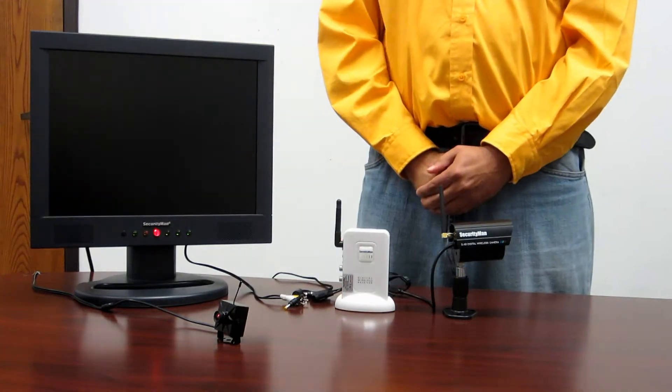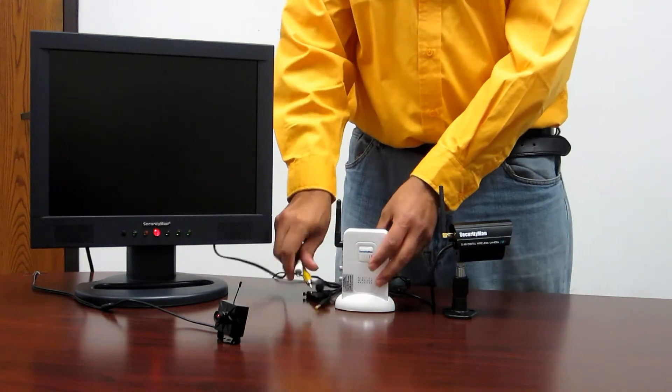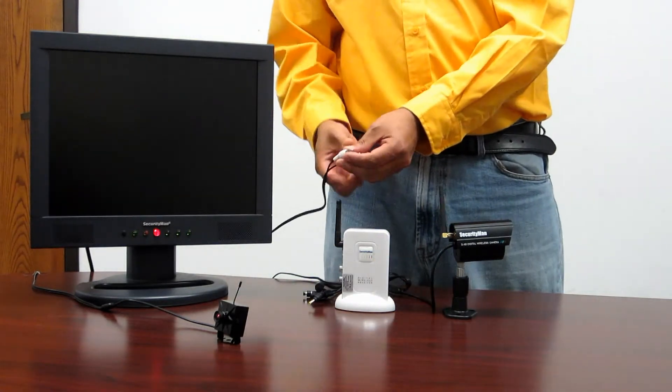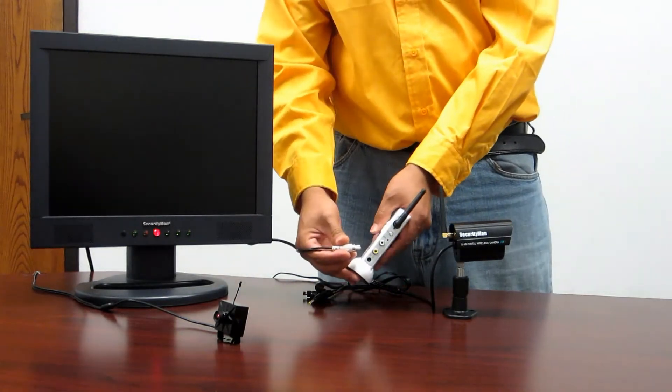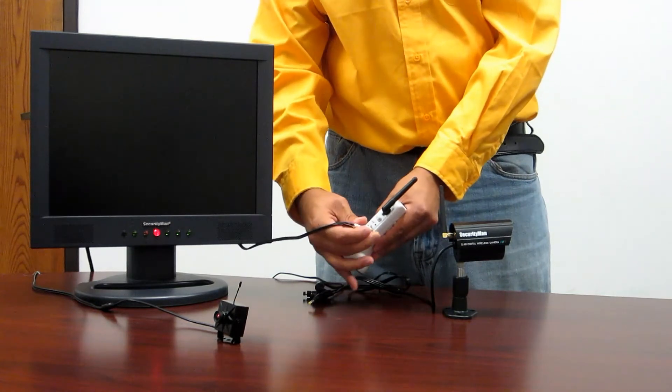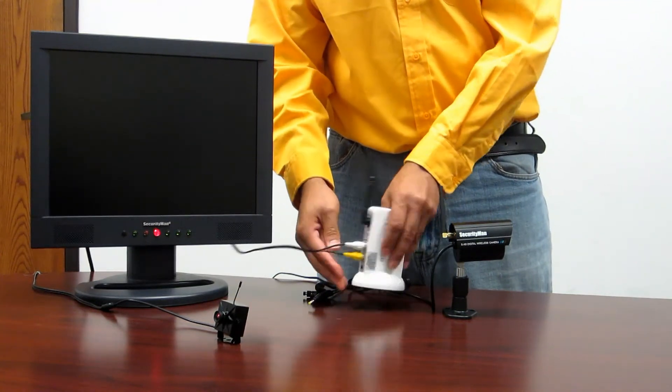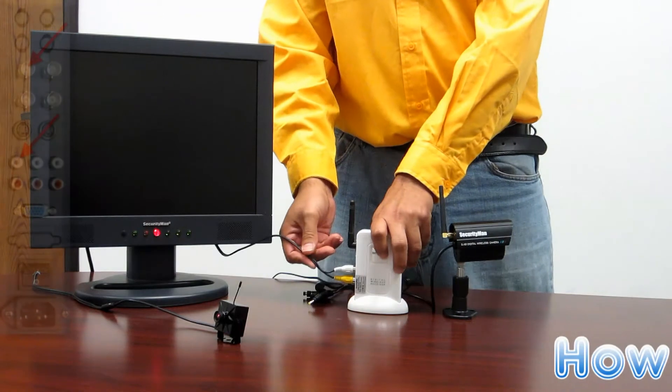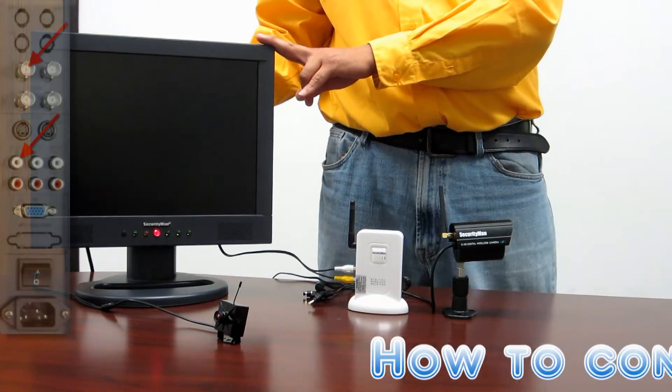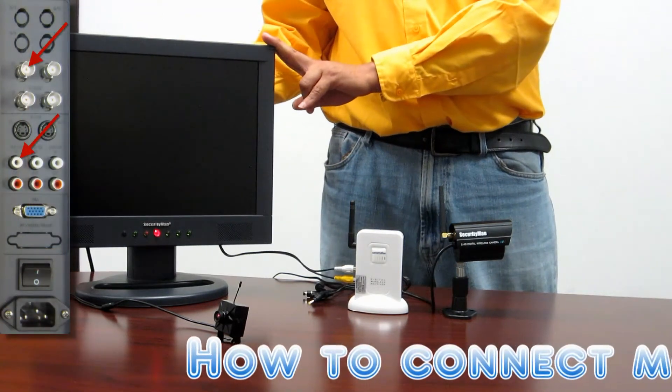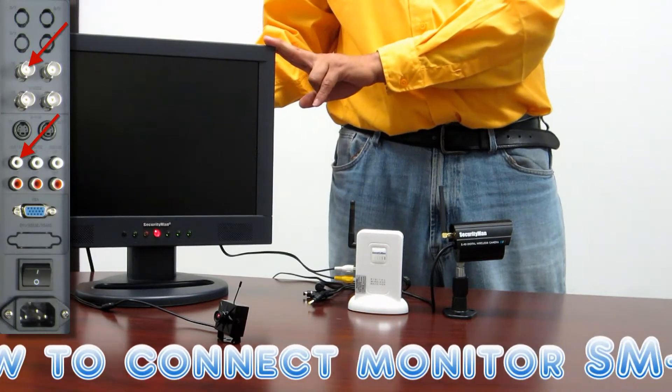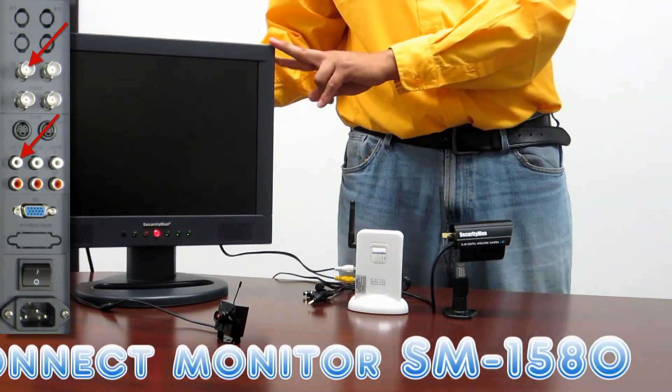To get started the first thing you want to do is get the audio video cables that were provided and connect them to the side of your receiver. Get the remaining ends of these cables and plug those into the back or front of your TV or monitor being used. Make sure you match the color coding, yellow for video, white for audio.